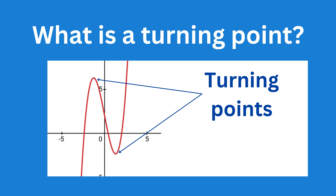First things first, let's define what a turning point is. In mathematics, a turning point of a function is where the function changes direction from increasing to decreasing, or vice versa. These points are crucial in understanding the overall shape and behavior of the graph. For cubic functions, which are polynomial functions of degree three, we can have up to two turning points.